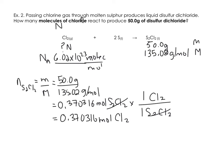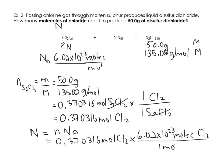So we have 0.370316 moles of chlorine. Now we've got moles of chlorine, we can find the number of particles. Moles times Avogadro's number: 0.370316 times 6.02 times 10^23 molecules of Cl2 per 1 mole. Moles cancel and we're left with molecules. So 2.23 times 10^23 molecules of chlorine. There's your answer.